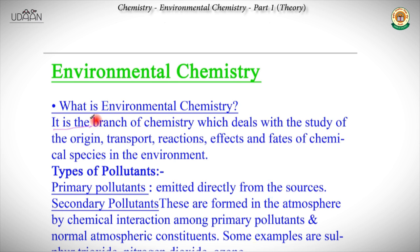Basically, environmental chemistry is the branch of chemistry which deals with the study of origin, transport, reactions, effects and fate of chemical species in the environment. This means that in all of our localities, chemical reactions and all of our study is environmental chemistry. Environmental chemistry has the goal of studying the environment, the chemical species in it, and the chemical reactions going on because these factors affect our lives a lot.